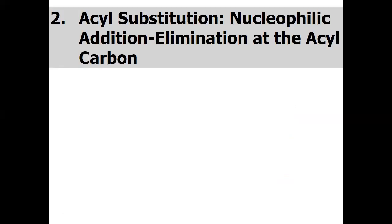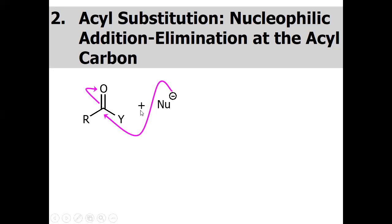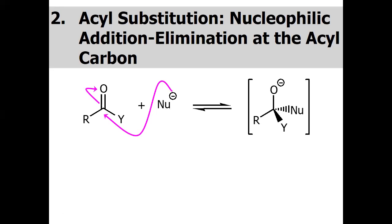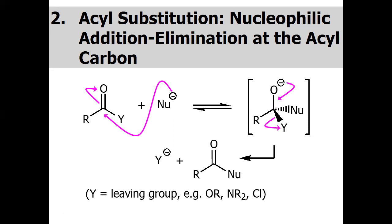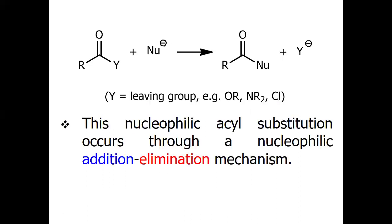Another very important topic is acyl substitution. Nucleophilic substitution is very common, but keep in mind that nucleophilic substitution always occurs via a tetrahedral intermediate. This is because the carbonyl compound has sp2 hybridization, and an sp2-hybridized carbonyl compound cannot directly give the substituted product. As mentioned, this nucleophilic acyl substitution occurs through nucleophilic addition and elimination.